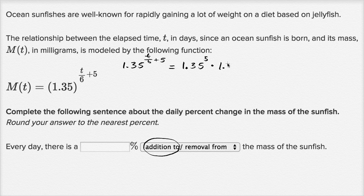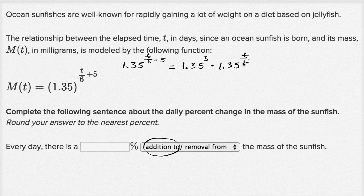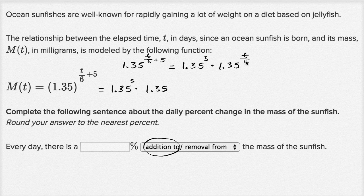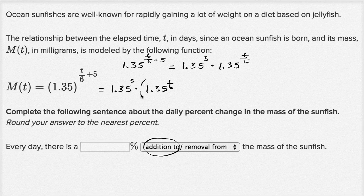That's the same thing as 1.35 to the fifth power times 1.35 to the t over sixth power. And that's going to be equal to 1.35 to the fifth power times 1.35, and I can separate this t over six as one sixth times t, so 1.35 to the one sixth power, and then that being raised to the tth power.